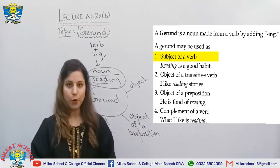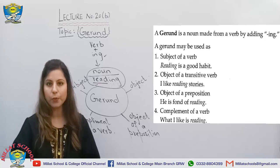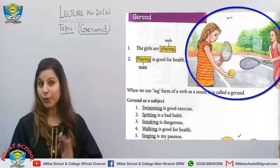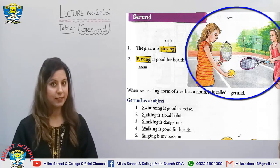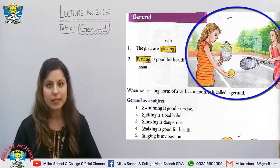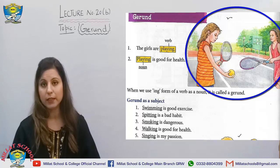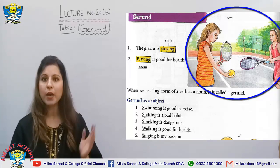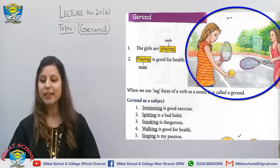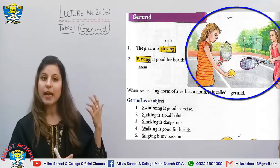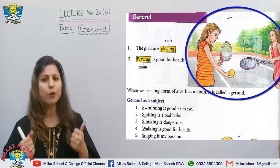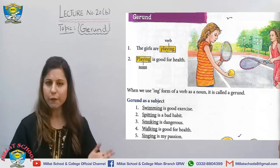Now let's see a few examples to make this clearer. You can see in this picture what the girls are doing — they are playing. 'The girls are playing' is a regular sentence, but 'playing' here is actually a verb — that is not our gerund. The gerund would be in the second sentence: 'Playing is good for health.' Here 'playing' is the subject, and the subject is our gerund.